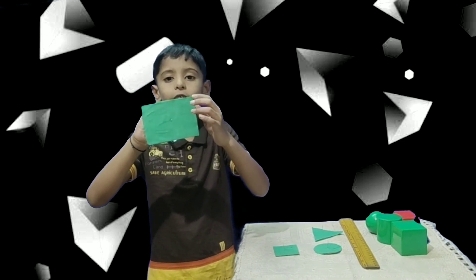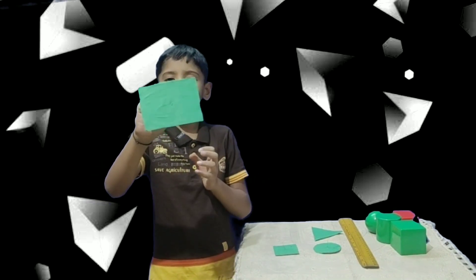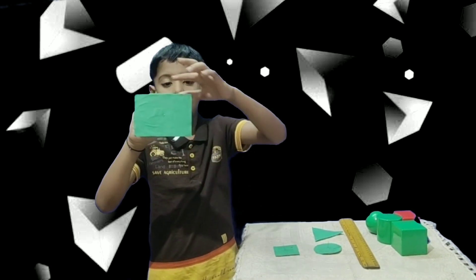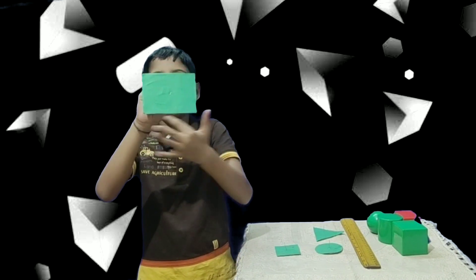Two straight lines meet at a point called corners. This is rectangle. Come on, let's count its sides. One, two, three, four.